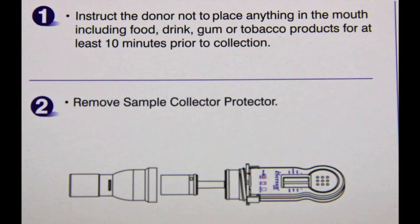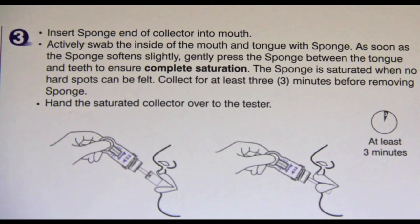Next, remove the sample collector protector. Then have the person insert the sponge end of the collector into their mouth and swab the inside of their mouth including the tongue. When the sponge softens, they should gently press the sponge between the tongue and teeth to ensure complete saturation, so no hard spots are felt within 3 minutes before removing the sponge.